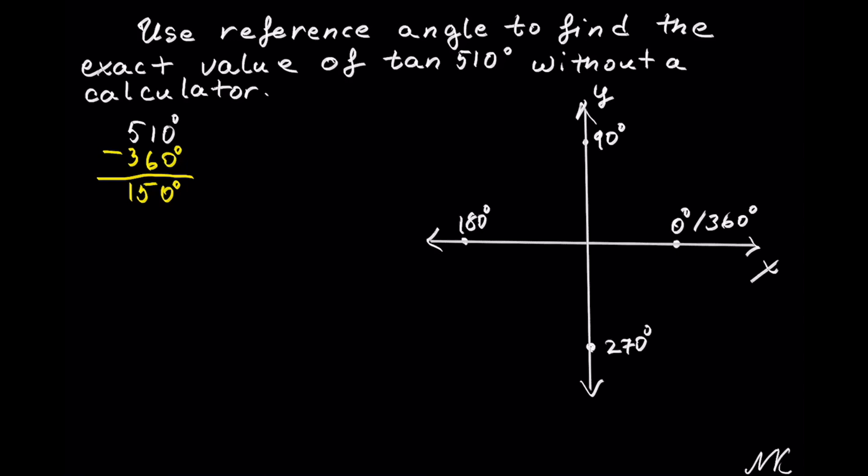150 degrees will fall between 90 and 180 degrees, so it will be around here. So this is the coterminal angle. The reference angle theta is always with the x-axis, so we need to find this theta.